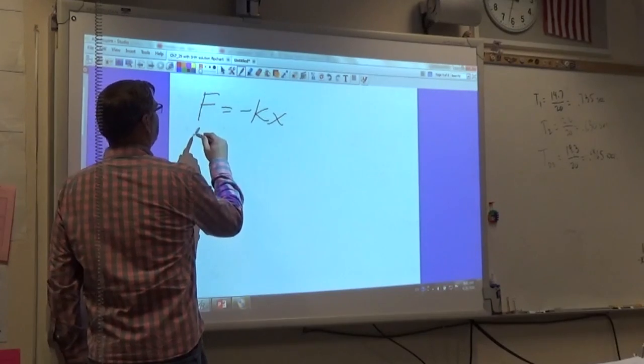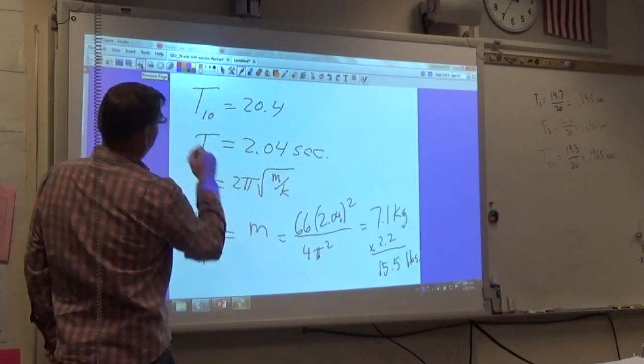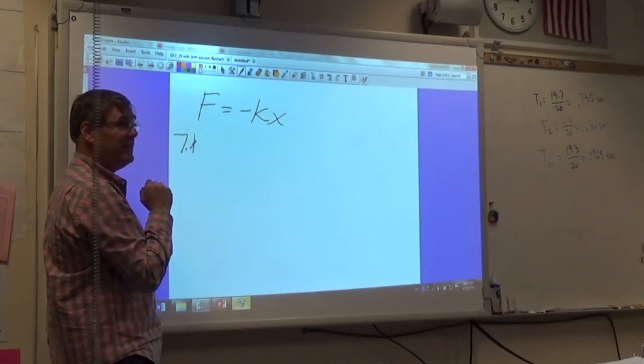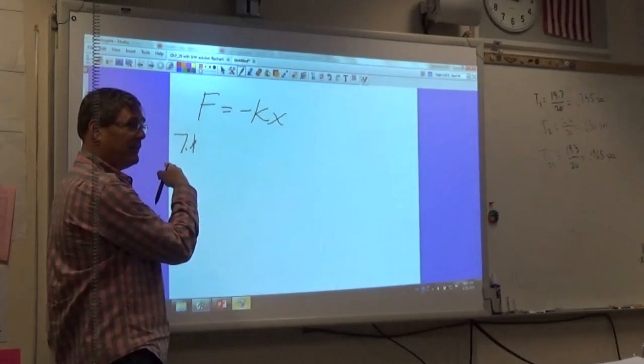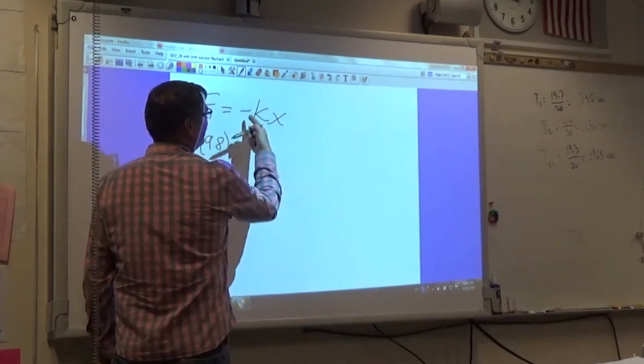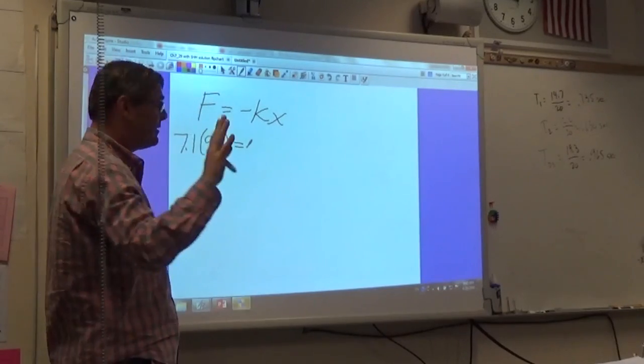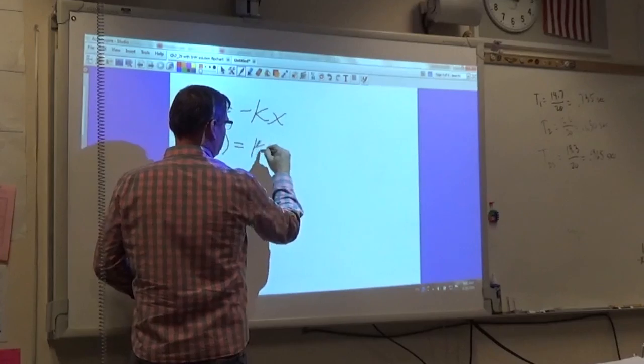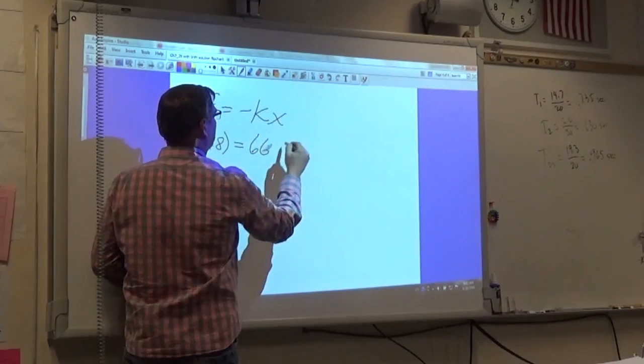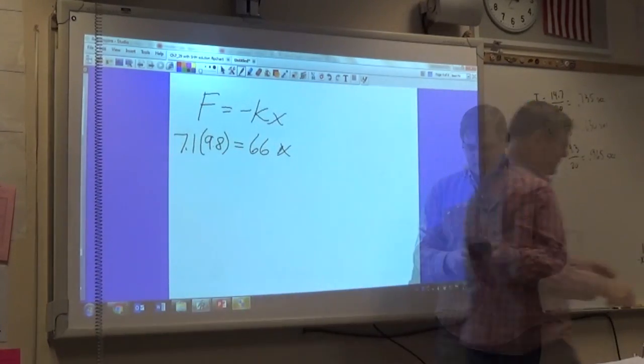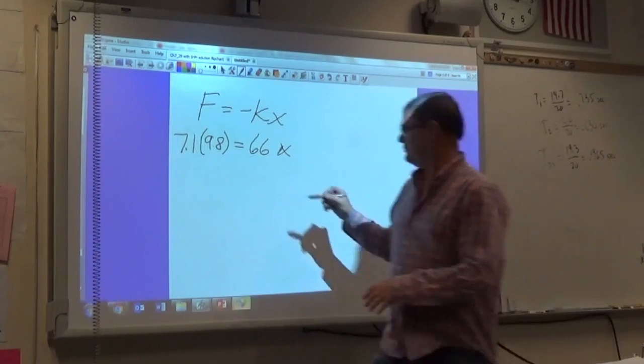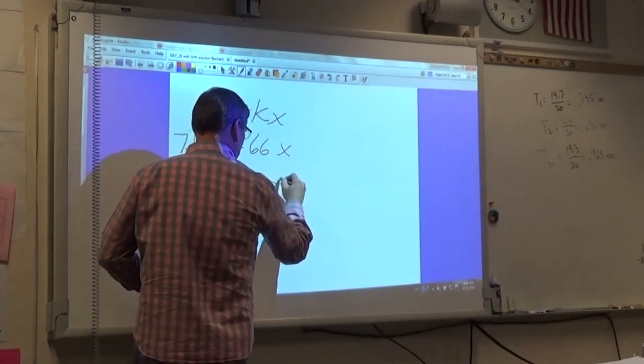Now, the force we said was 7.1. 7.1, but that's kilograms, so force is in newtons. So how do I convert that to newtons? Multiplied by 9.8, right? The negative sign, remember, is just if the stretch is down, the force is up. It's just... So let's not worry about that. So K is what... K is 66. So let's get out our calculator. Divided by 66. 1.05. What are the units of that? Meters, right?